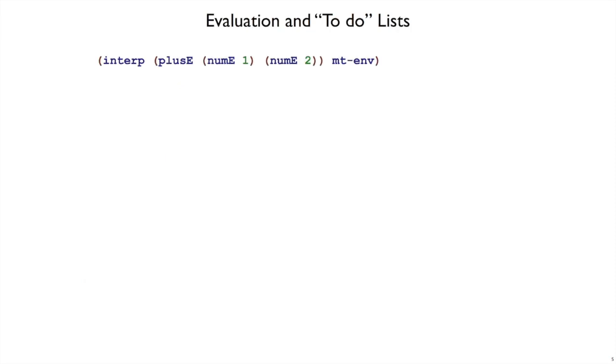So how do things happen right now? Right now when you call interp of an expression with two sub-expressions, so here we've got a plus e with a num e1 and num e2, then of course interp dispatches to the plus e case, which has a num plus with two recursive calls to interp.